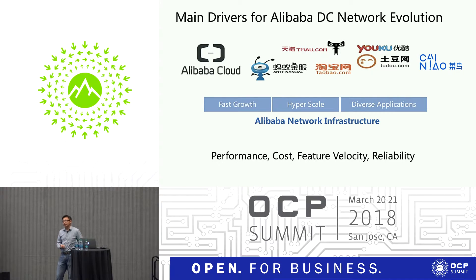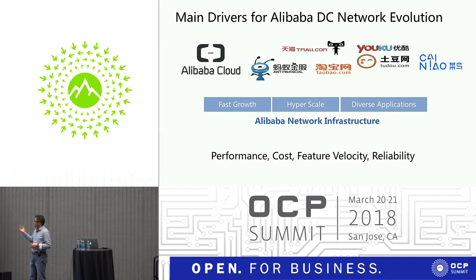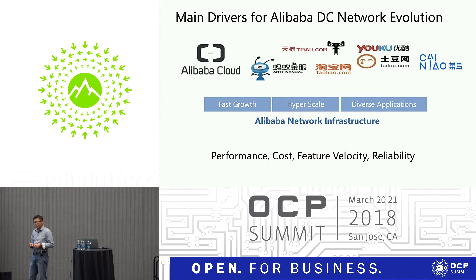The second is online payments and mobile payments — Alipay. For those of you who recently traveled to China, you probably have the feeling you don't need any cash or credit card. The third is our public cloud service. The fourth is logistics and shipment — our platform carries about 70% of the total shipment in China. The fifth is entertainment: Youku for video, Alibaba Pictures for movies and music. All these diverse applications run on the same network infrastructure, which drives our need for evolution.